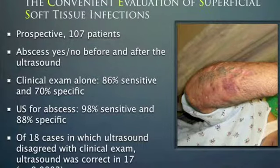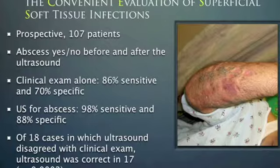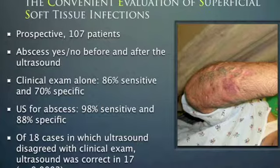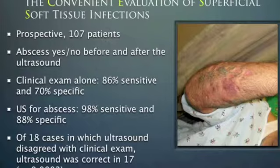When it comes to abscesses and differentiating them from cellulitis, one study titled ABSCESS — Applied Bedside Sonography for the Convenient Evaluation of Superficial Soft Tissue Infections — was prospective and enrolled 107 patients. They forced clinicians to answer yes or no before and after ultrasound regarding whether there was an abscess. The clinical exam showed poor test characteristics, but ultrasound characteristics were much better. There were 18 cases where ultrasound disagreed with clinical exam, and ultrasound was correct in 17 of those 18 cases with a significant p-value.